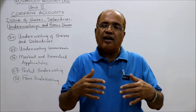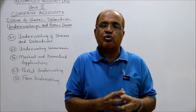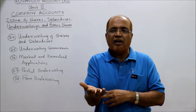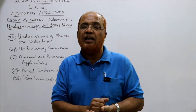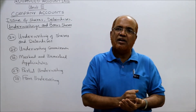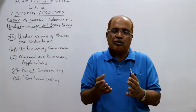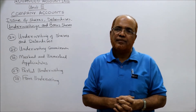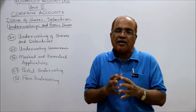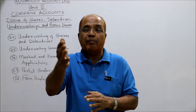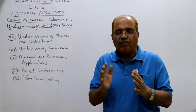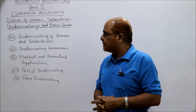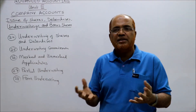Every underwriter will issue application forms that bear the name of the underwriter. When the company receives the forms, it can identify which forms came through which underwriter. The company can then determine how many shares or debentures are coming from each of the underwriters. Whichever form bears the name of an underwriter, it is called a marked application.